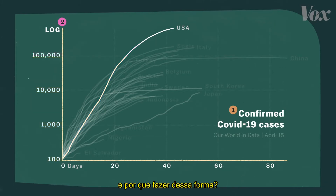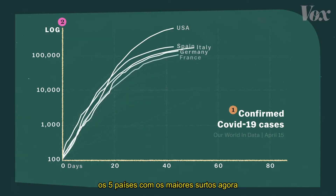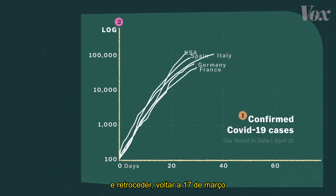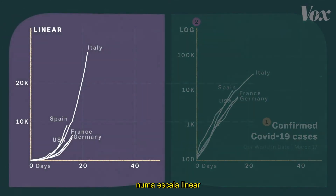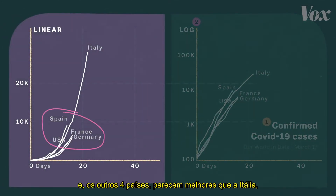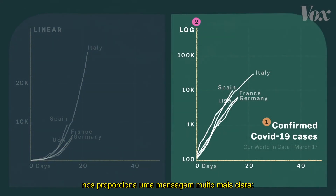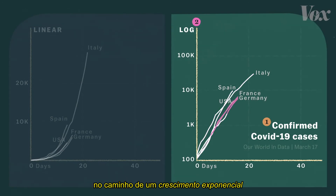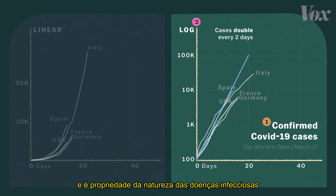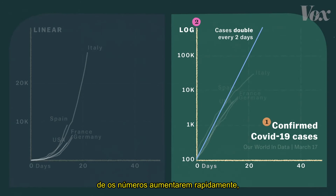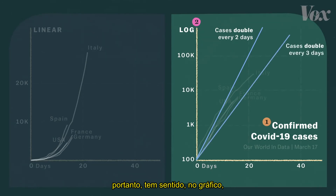So why do it this way? Let's take the five countries with the largest outbreaks right now and rewind them back to March 17th. On a linear scale, it looked like things were pretty bad in Italy, but the others were doing better. The log scale offered a much clearer warning — we were all on the same path of exponential growth. It's the nature of infectious disease that numbers get big fast, so it makes sense for numbers to get big fast on the chart, too.